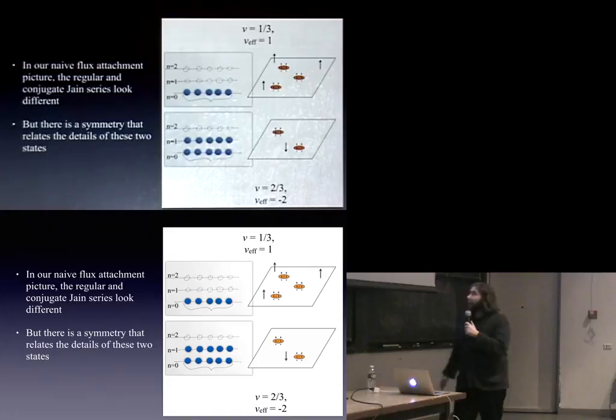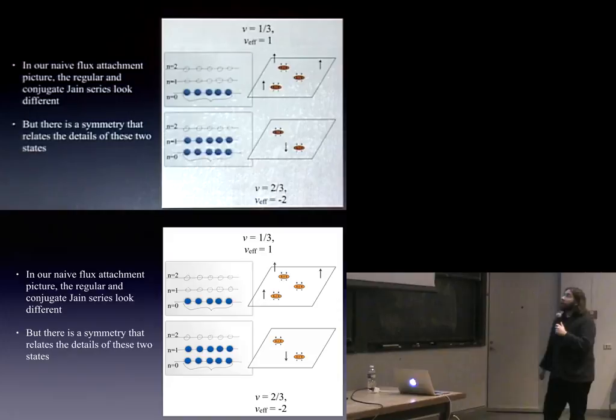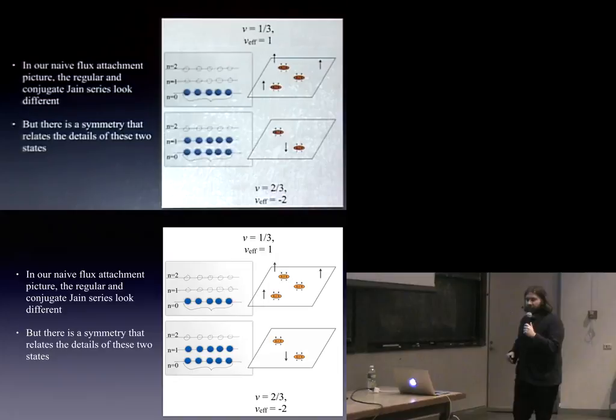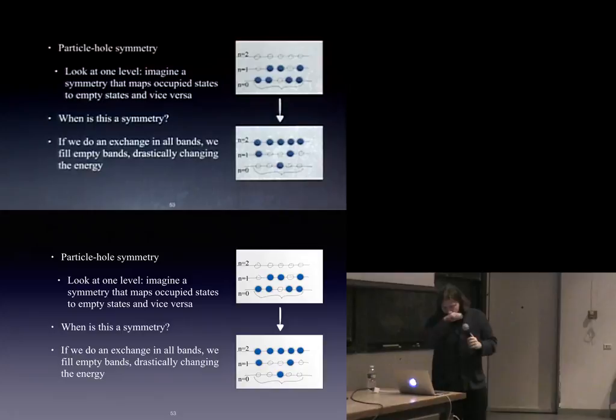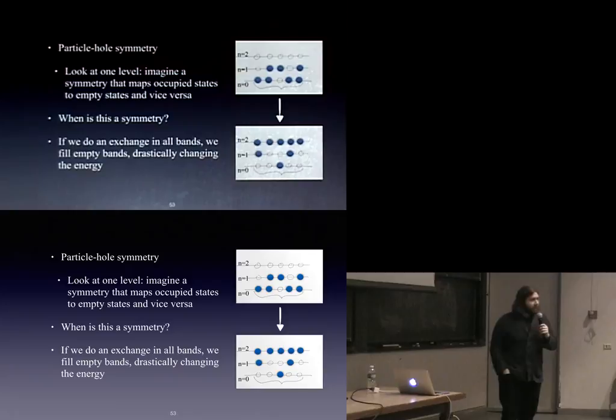Our naive flux attachment story has an asymmetry with a reflection around the ν = 1/2 state. Why do we care about that? It's not just a nice picture of reflection in a plot. The real reason is that there's an actual physical symmetry called particle-hole symmetry.